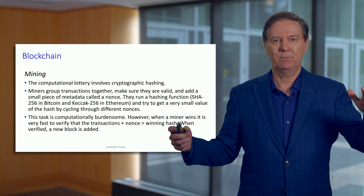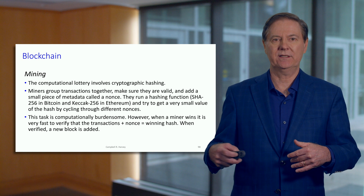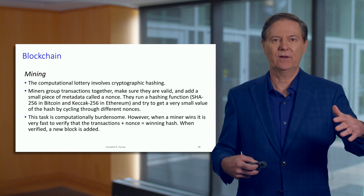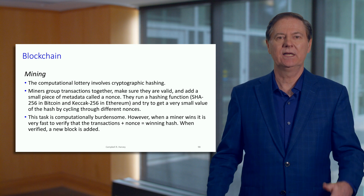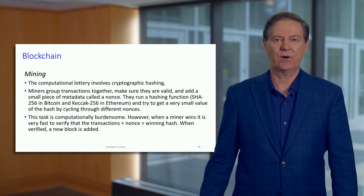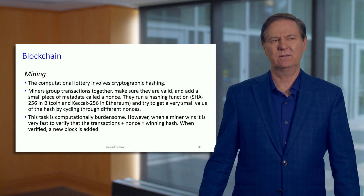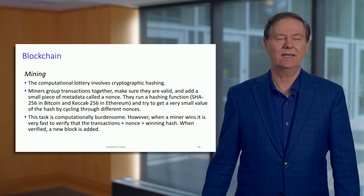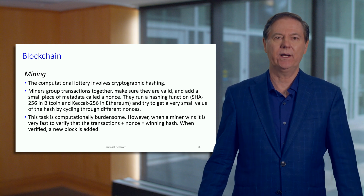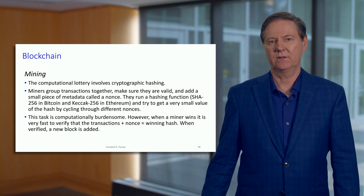They are verifying transactions and then do this work by putting a nonce attached to the transactions, and the one that wins the lottery gets paid — it's a very generous reward. Interestingly, about every three years that reward is halved in Bitcoin. And that's why in 2140, the supply of new Bitcoin goes to zero.